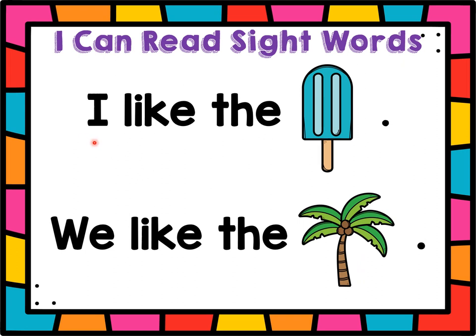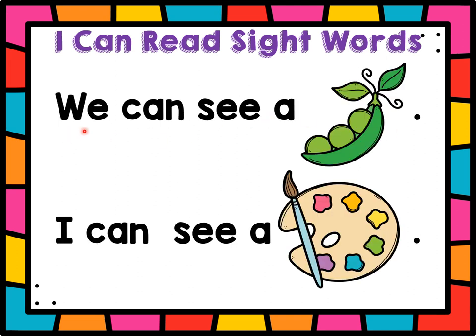Let's read the sight words together. Ready? I like the popsicle. We like the palm tree. We can see a pod — that's a pea pod. I can see a palette — that's a paint palette. Great job! Good job!